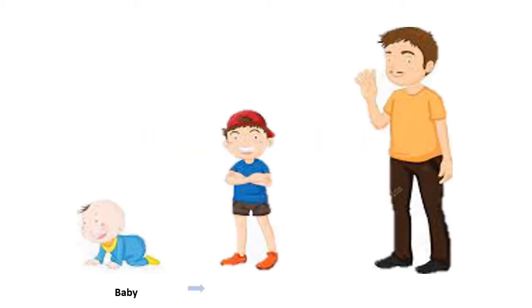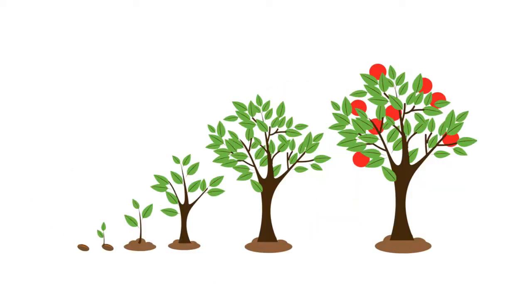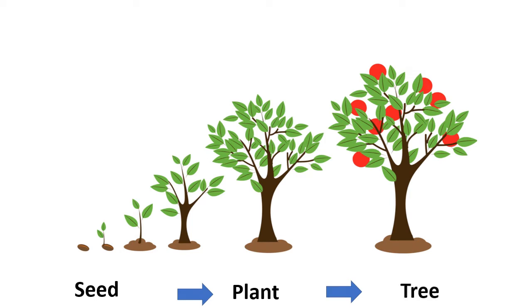Living things grow. A baby grows into a boy, who grows into a man. A calf grows into a cow. A seed grows into a plant and then grows into a tree.